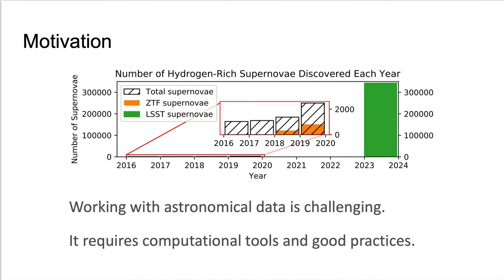My area of research is studying exploding stars, also known as supernovae. One of my motivations for creating this lesson can be demonstrated by this plot. Here I'm showing the number of hydrogen-rich supernovae discovered each year as hatched rectangles. You can see that the number discovered is slowly increasing, but starting in 2023, the supernovae discovered by the Rubin Observatory's Legacy Survey of Space and Time will completely dwarf our current findings. My field is rapidly moving away from data reduction of individual images on personal computers and into a world of databases and alert streams.